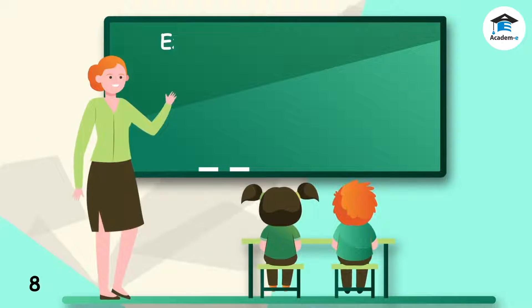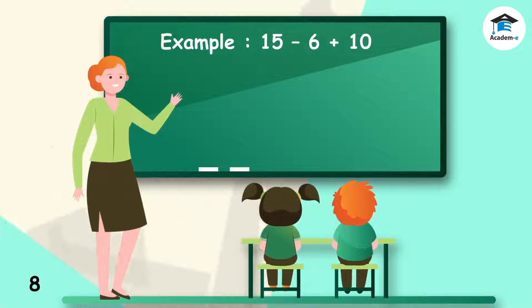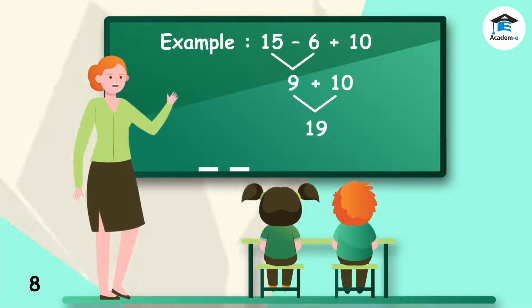Here's another example. 15 minus 6 plus 10. We have addition and subtraction. Whichever operation comes first from left to right is the one we shall do first. 15 minus 6 is 9 and 9 plus 10 is 19.